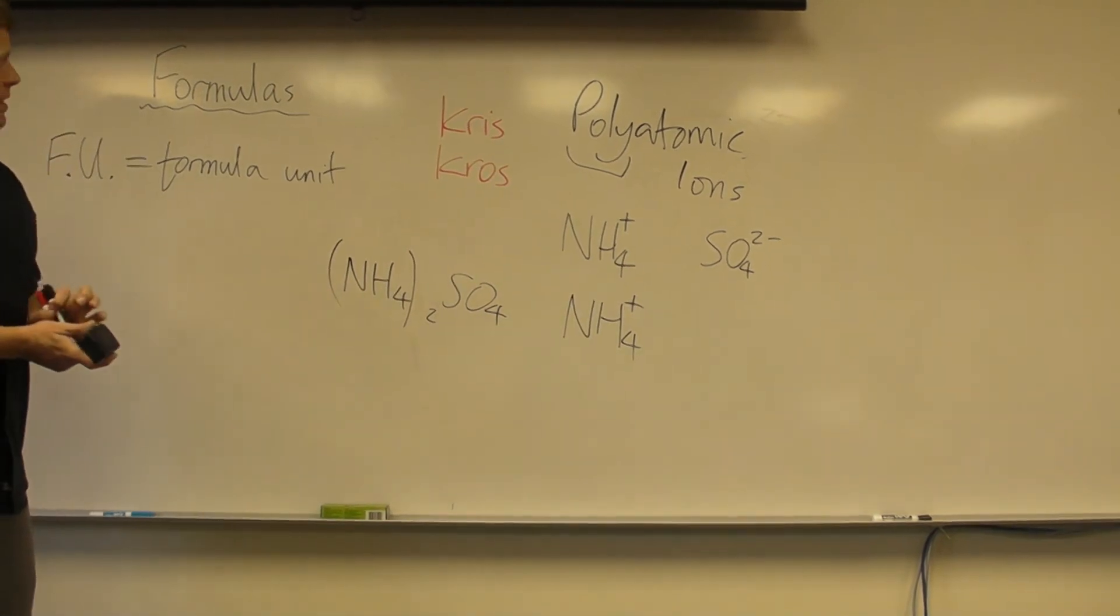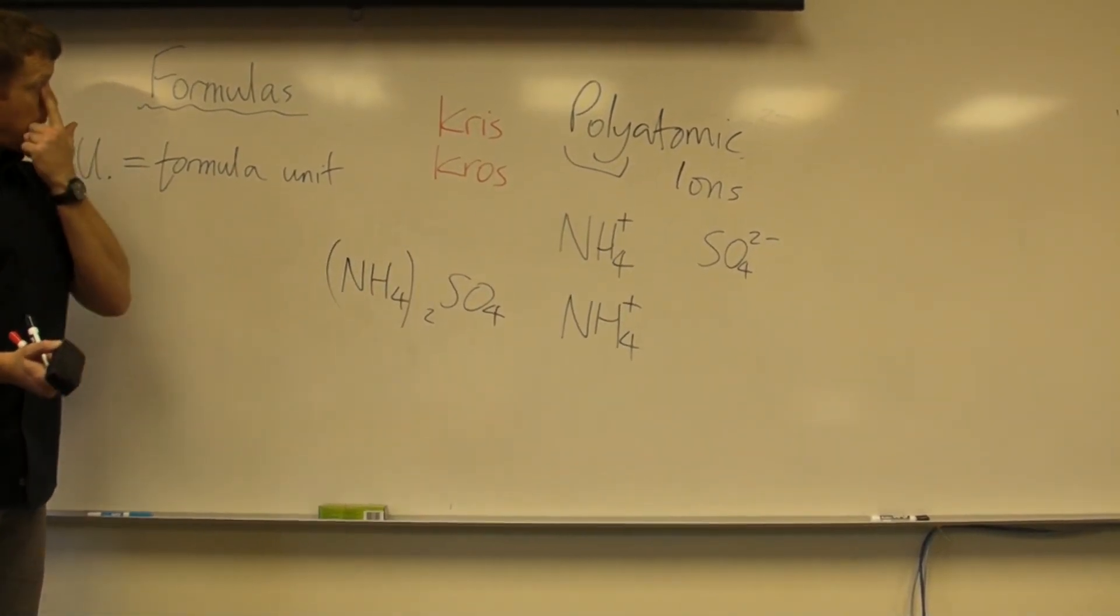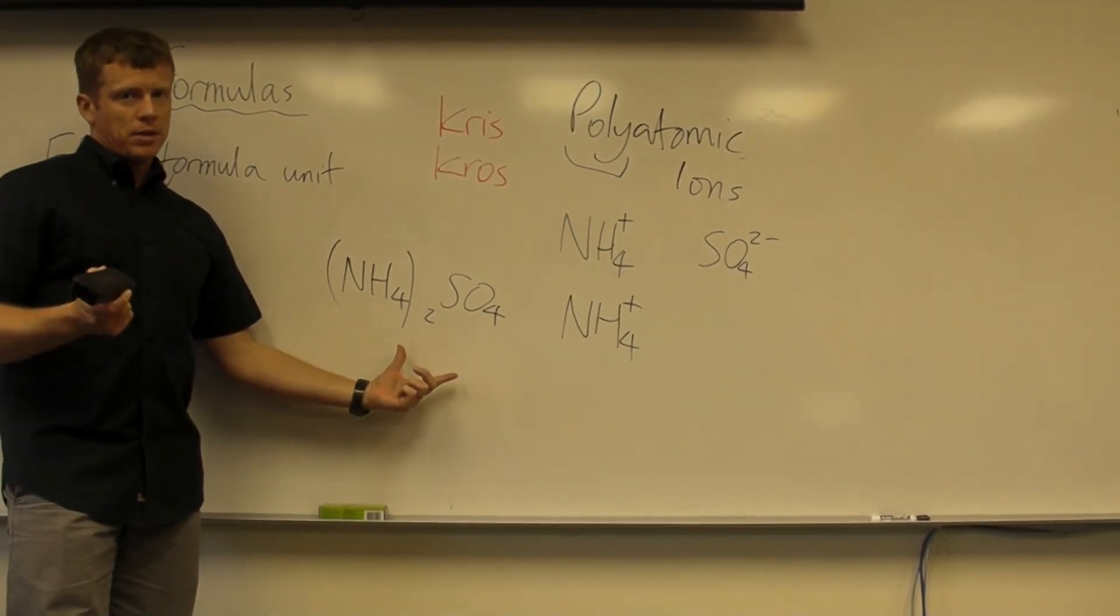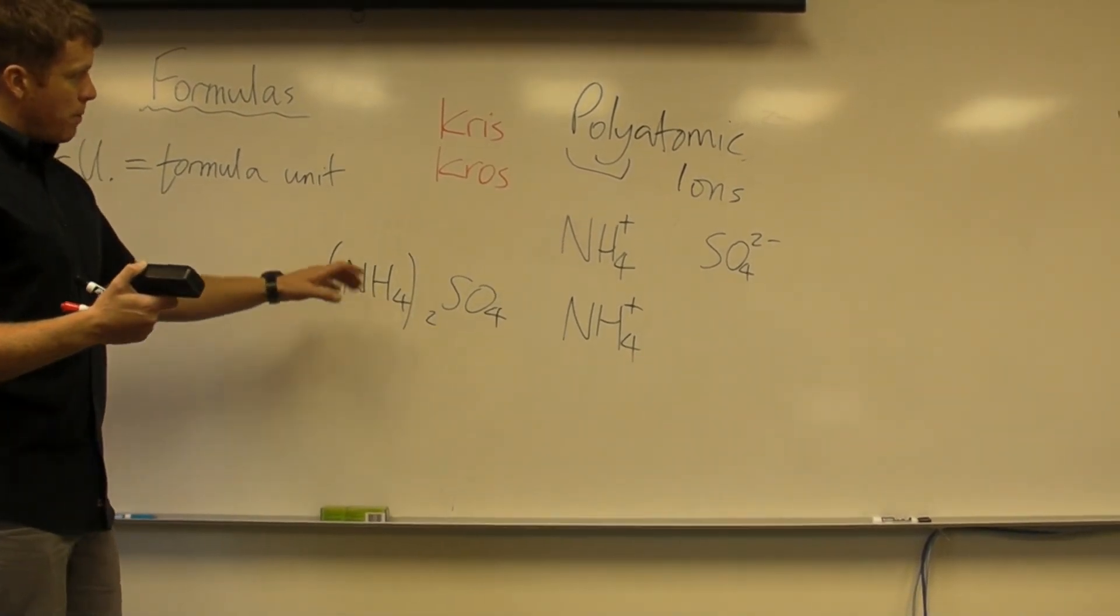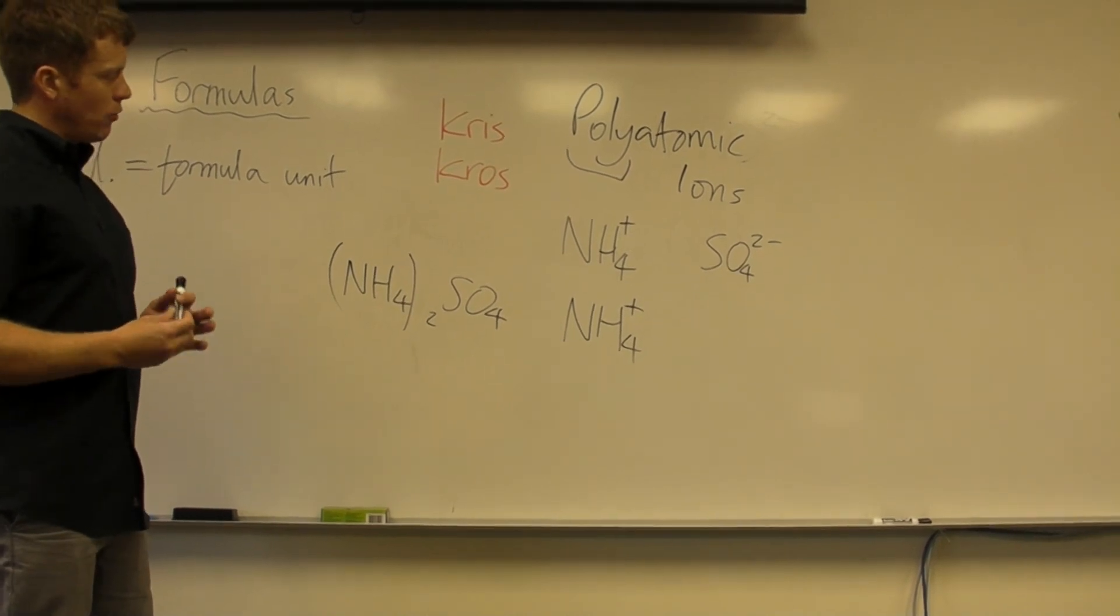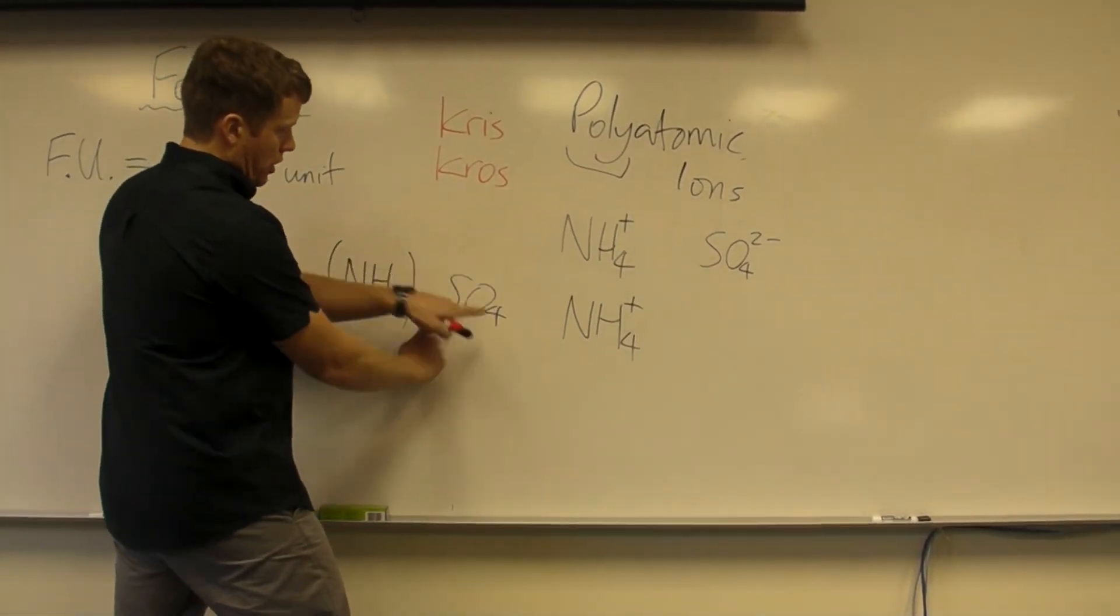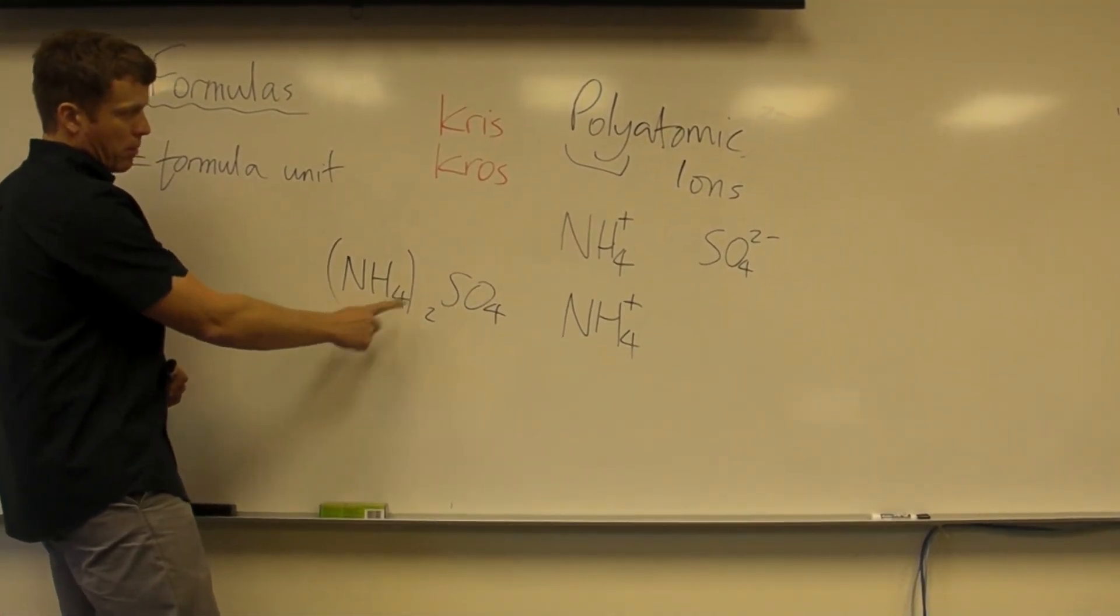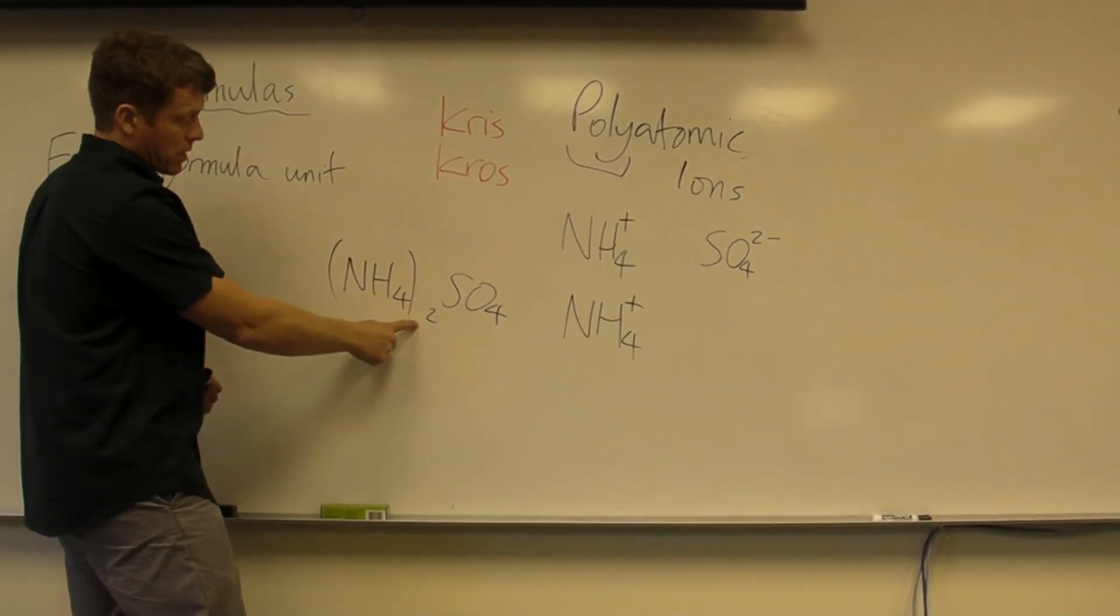So, the big idea of formula writing, or FU, or formula units, is we're trying to write the lowest common ratio of elements bonded together, or ions bonded together. So, crisscross always works. And it's a really nice and simple method to use. All you do is bring the opposite charges to the opposite place. When you're using these fancy looking substances like ammonium or sulfate, if you need more than one of those, use parentheses and then put the number on the outside.